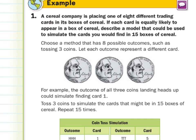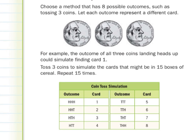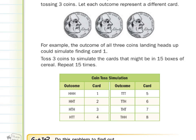Choose a method that has eight possible outcomes, such as tossing three coins. You have eight different trading cards, so eight possible outcomes. When you toss three coins, that would represent eight different outcomes. Each outcome could represent a different card. For example, all three coins landing heads up could simulate finding card one. Toss three coins to simulate the cards that might be in 15 boxes of cereal and repeat 15 times.